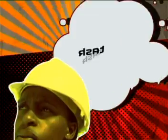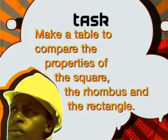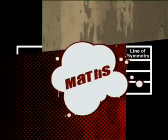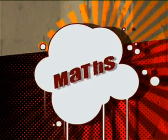Here is something for you to do as a task. Make a table to compare the properties of the square, the rhombus, and the rectangle. How many properties do they have in common? Join us next time as we explore another rare kind of quadrilateral. Until then, Salani.